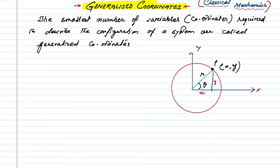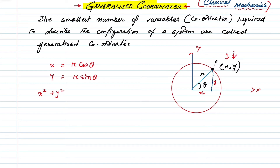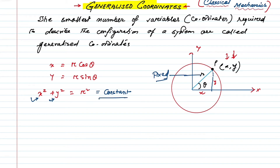If we express x and y in terms of theta, we get x = r cos θ and y = r sin θ. Squaring and adding these two equations gives x² + y² = r². Since r is fixed, this is constant. Although x and y are both variables, their sum of squares is constant, so the only variable here is theta. Therefore, theta is called the generalized coordinate.